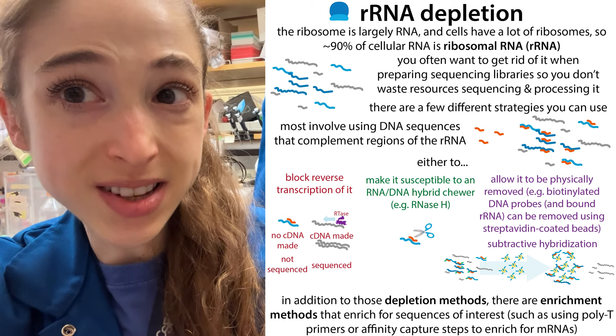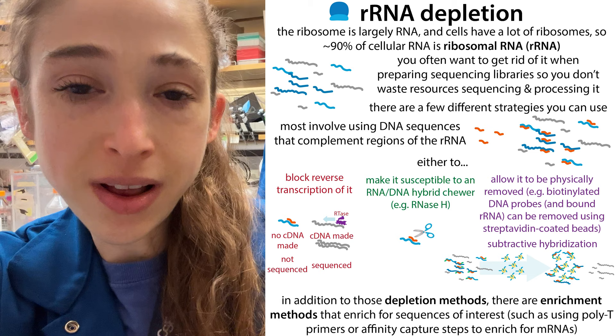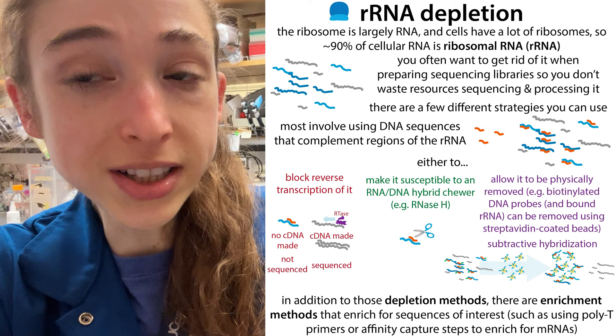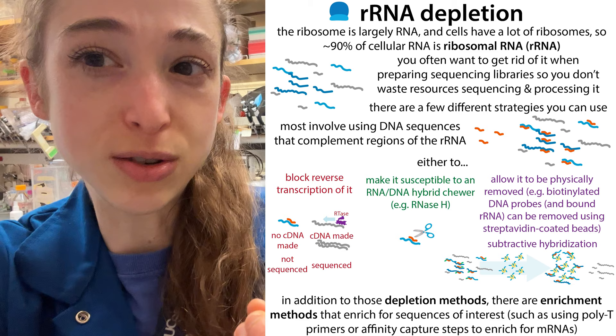Did you know that about 90% of a cell's RNA is actually ribosomal RNA? If you want to look at the other RNAs, like messenger RNAs, that rRNA can get in the way. So we have methods to either get rid of that rRNA — rRNA depletion — or pull out the stuff we care about and sequence that, such as mRNA enrichment.